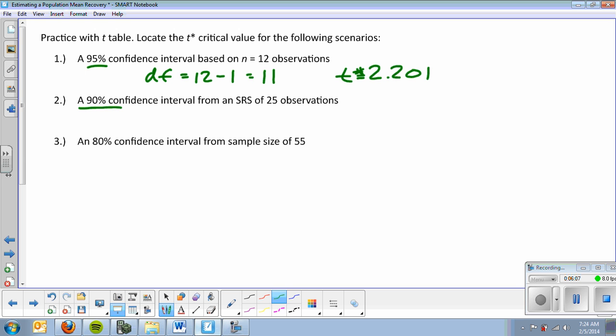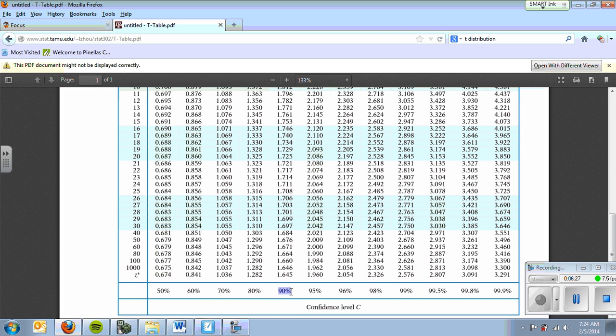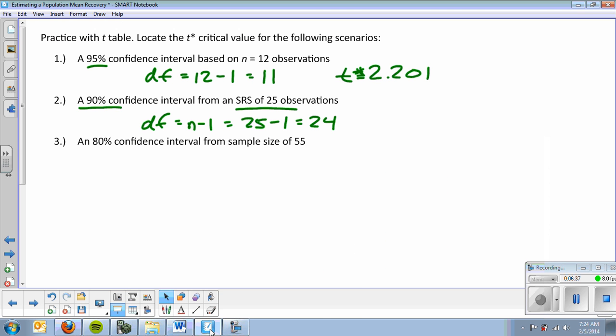Let's say I want a 90% confidence interval from a simple random sample of 25 observations. Degrees of freedom, N minus 1, 25 minus 1, obviously is 24. I go to my table, I want 90% confidence at 24. So 90% confidence, I'm in this column, 24 degrees of freedom, I scan over, and I get 1.711. So that would be my T star.